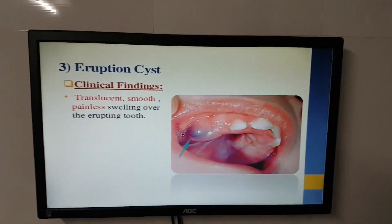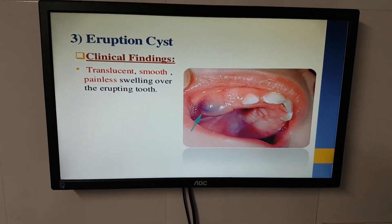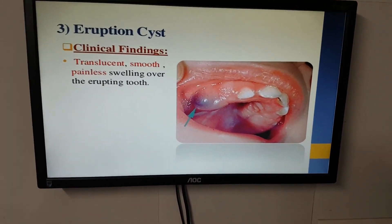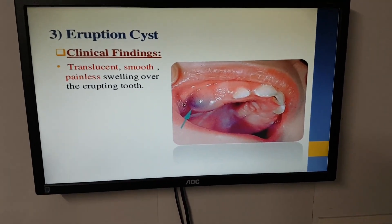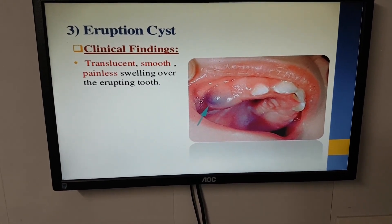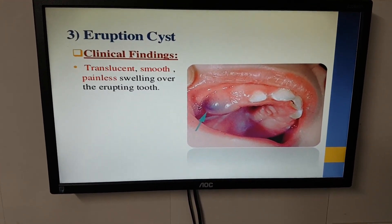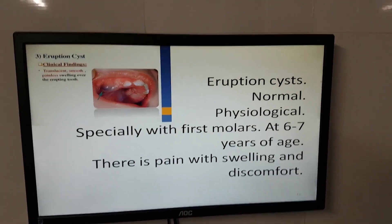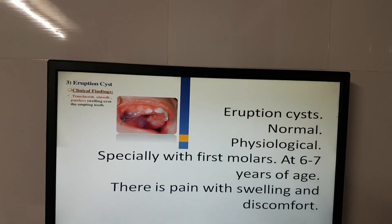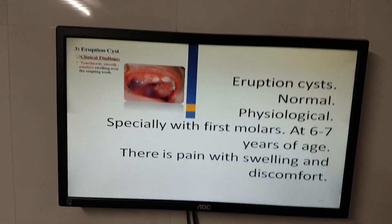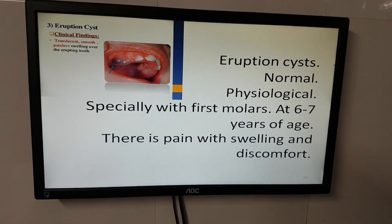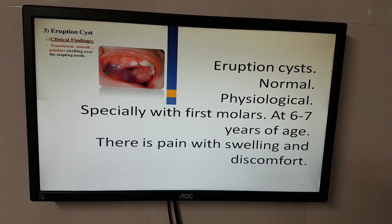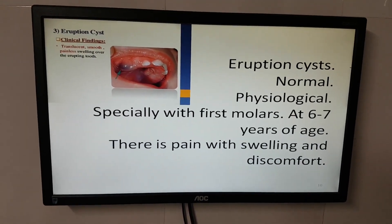This photo shows eruption disease — a translucent, smooth, painless swelling over the erupting tooth. These are normal physiological occurrences, especially with first molars. At six to seven years of age, there may be some pain, swelling, and discomfort, but it resolves on its own.